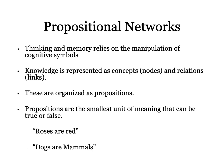Knowledge is represented as concepts, which we'll show as nodes in a network, and relations between those nodes. You've got ideas, concepts, objects, and relationships between those objects — that's what knowledge is. These are organized as propositions, and a proposition is the smallest unit of meaning that can be either true or false. The statement 'roses are red' is a proposition because we can verify it as true or false. 'Dogs are mammals' is another example. 'Roses' alone isn't true or false — it's just a concept. 'Roses are red' is a proposition.